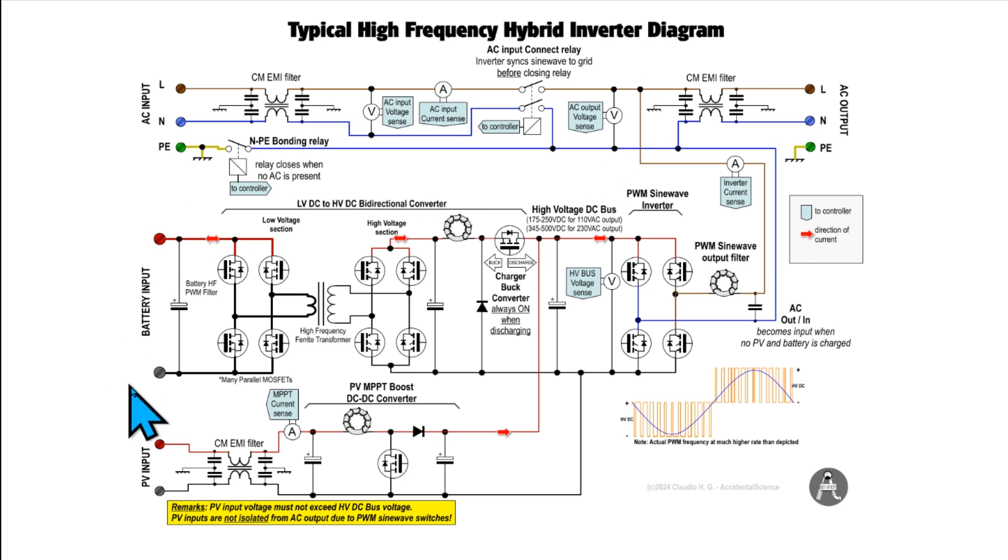And this is the hybrid inverter and the only difference in respect to the previous version is this part here, this circuitry that is used to manage battery. And here we have this part that uses a buck converter, here we have this transistor, this diode, this inductor and this capacitor that form together the buck converter.